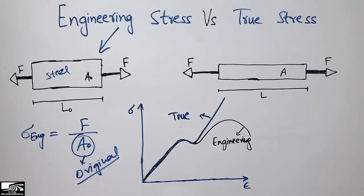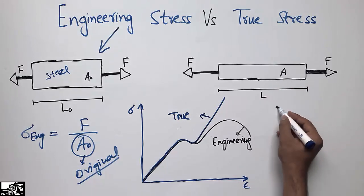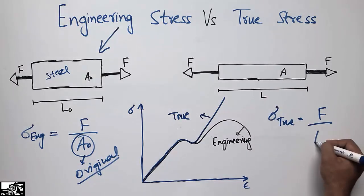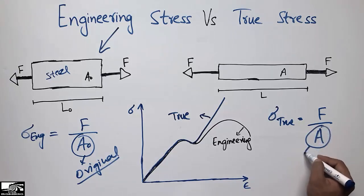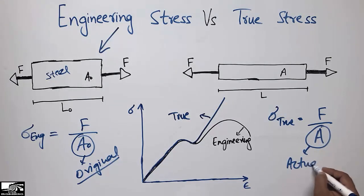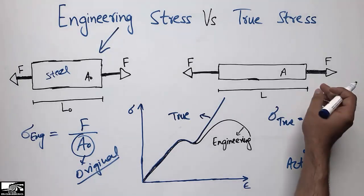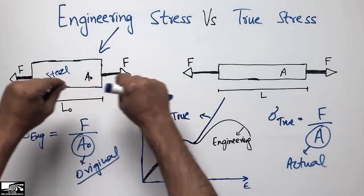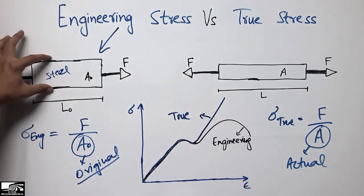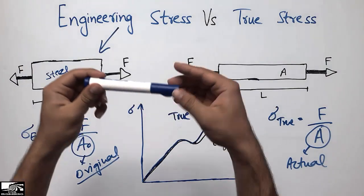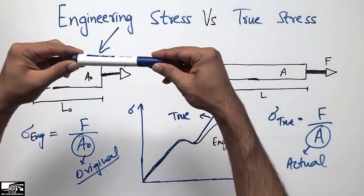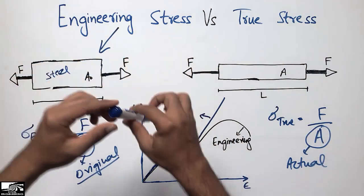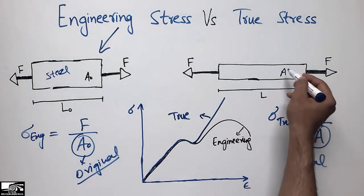In the case of true stress, we define it as force per unit actual area of the object. If I apply a tension force on both sides, this object reduces in area while increasing in length. That is the reality — when a load is applied, the object increases in length and reduces its area.